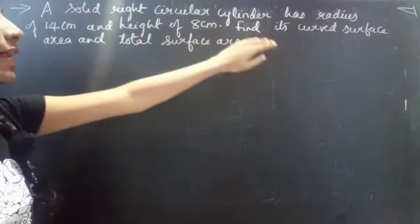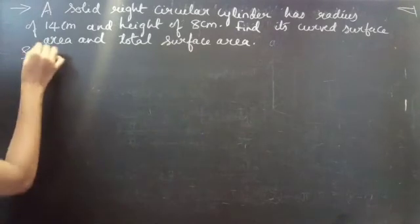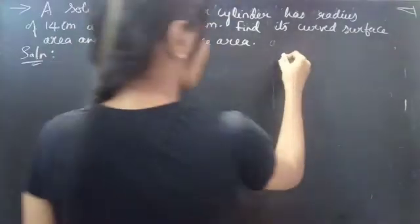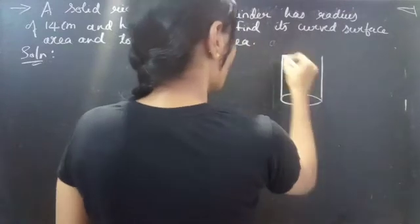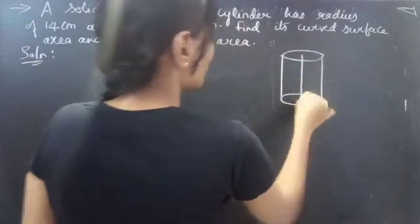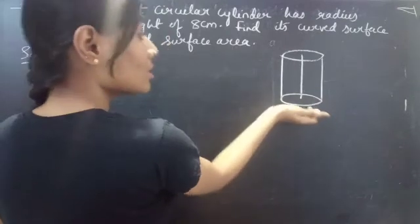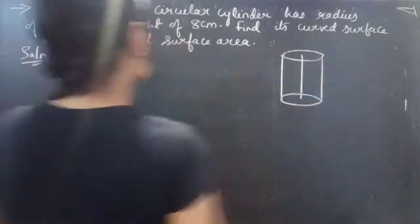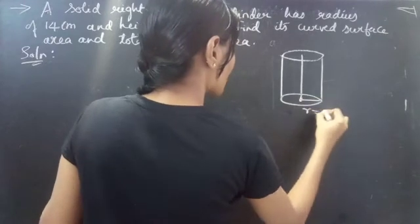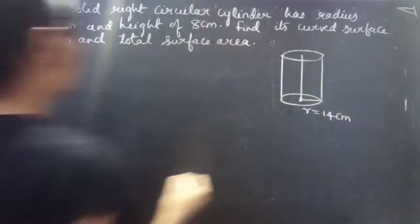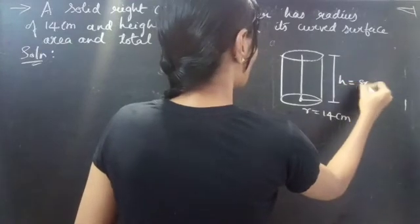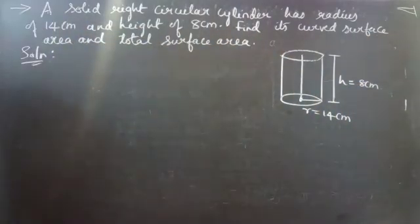Problem: a solid right circular cylinder has radius 14 centimeters and height 8 centimeters. A solid right circular cylinder means the circular base is exactly perpendicular to the axis. We are given radius r equals 14 centimeters and height h equals 8 centimeters.